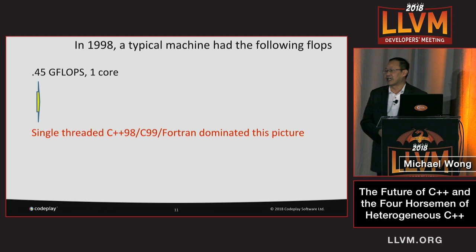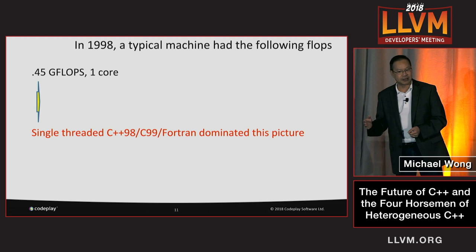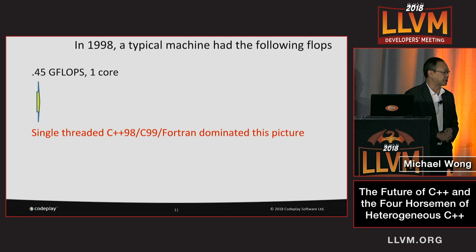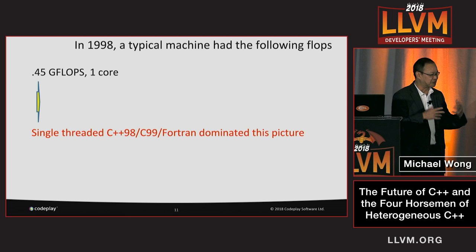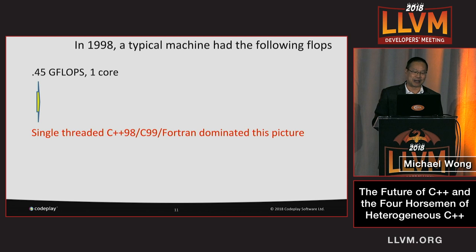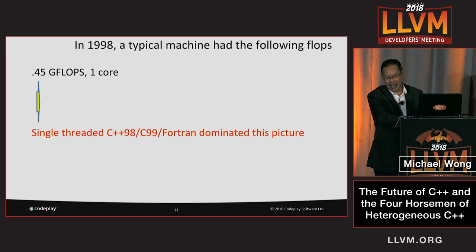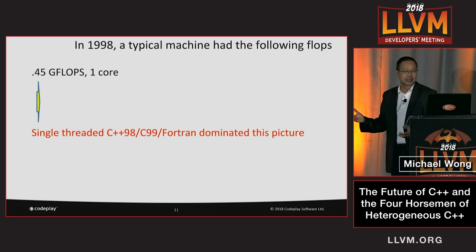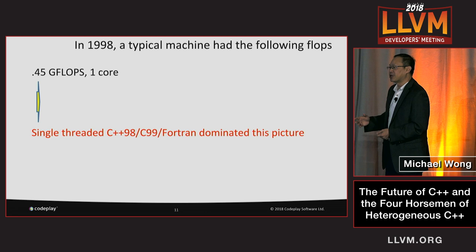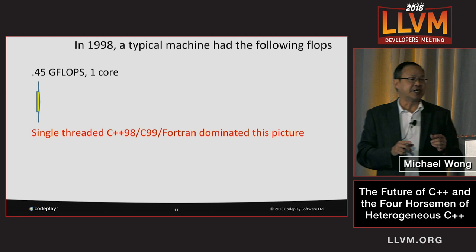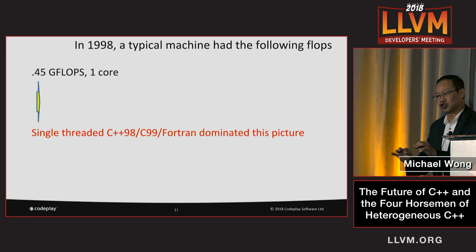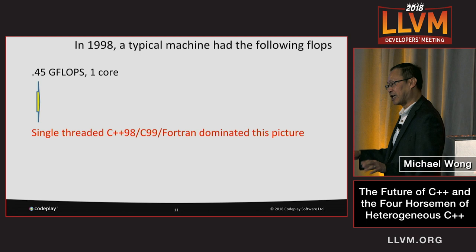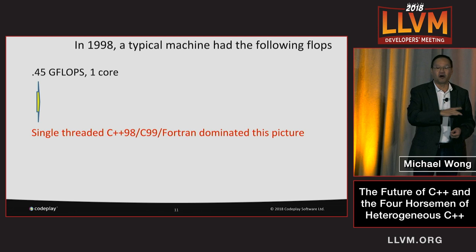I'm going to put this in context of three periods of my life. C++98, C++11, and C++17 — I worked through all that period of time helping to develop the C++ standard. In 1998, I bought a typical machine. It had a single core, probably two threads, and was capable of 0.45 gigaflops. It was a Pentium 2, it did not have a SIMD unit, and it did not have a GPU. C++98 was single-threaded, had an abstract machine, a flat addressing model, and it fitted that machine almost perfectly. C99 and Fortran also fitted that machine fairly well.